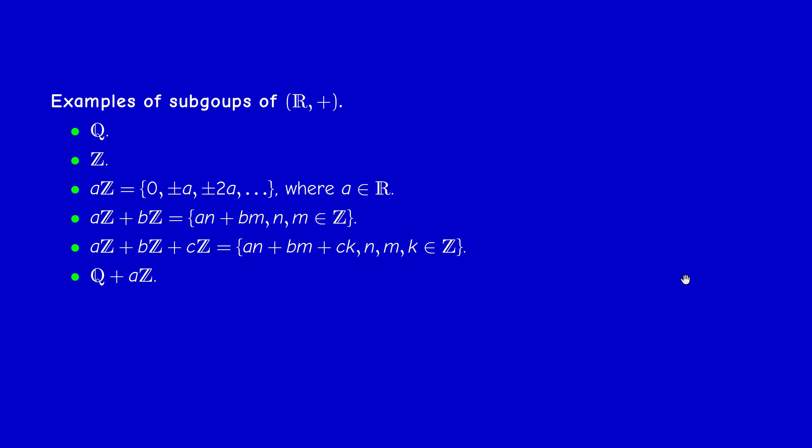We can take Q + aZ. Of course, if a is rational, this is just Q. But if a is irrational, this is something new.